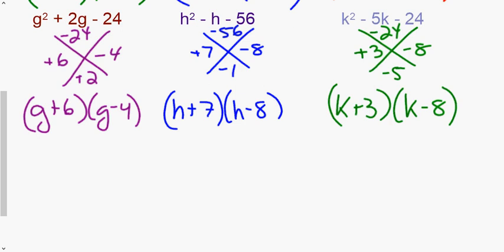For the h problem: if no leading coefficient is written, it's implied to be one. We have negative 56 and negative one on the bottom. Looking for numbers that multiply to 56 and are one apart, that's seven and eight. Seven minus eight is negative one, so the factors are (h + 7)(h − 8).